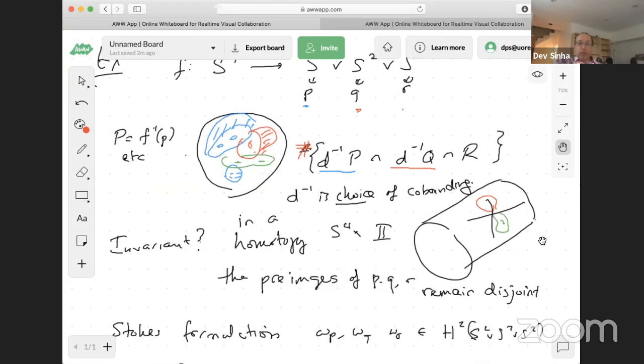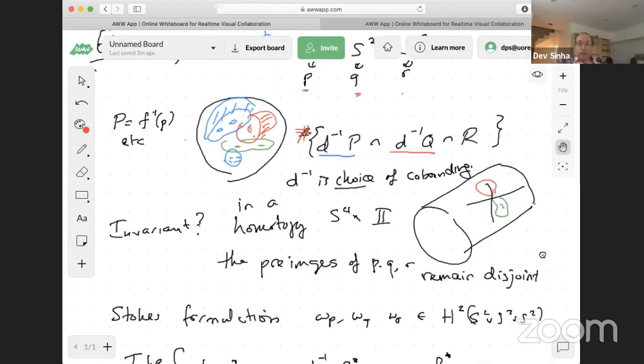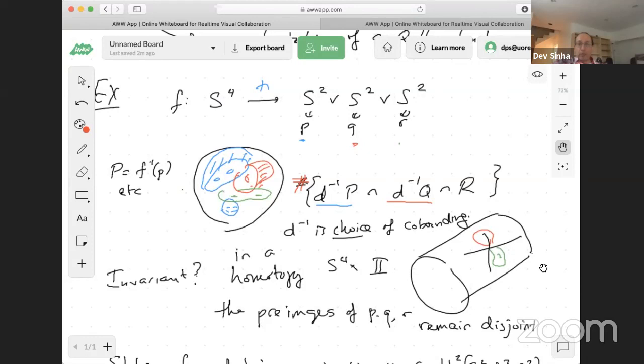So then, and then what I want to say is that this will be true. And you can imagine the choices in general for wedges of spheres, similar choices, similar iterated co-boundings. You take the inverse of everything, but one, when the one factor, when the dimensions are correct and you get an invariant number.